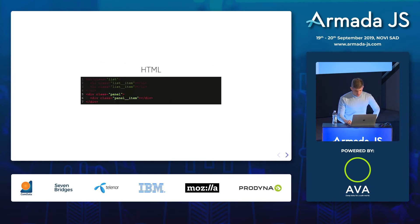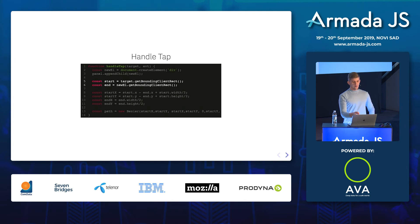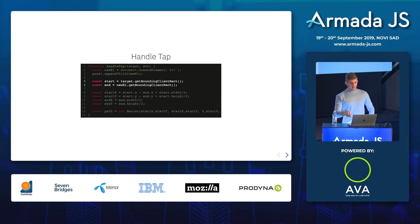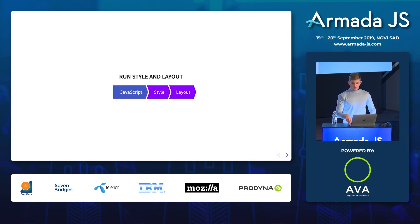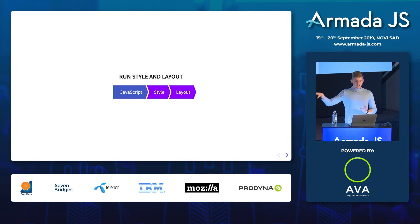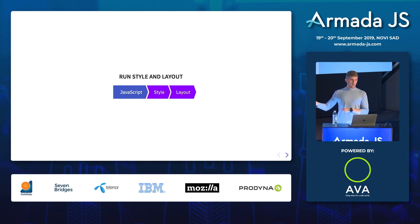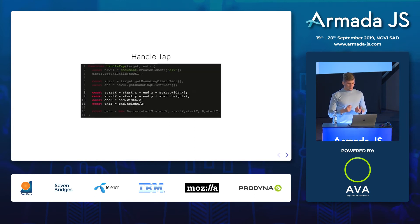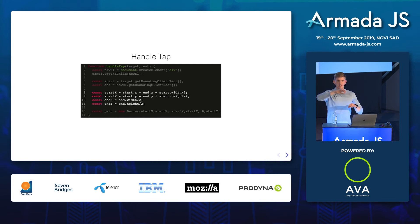We calculate positions of the starting element and the end element. This runs the JavaScript layout pipeline without actually rendering — we're asking the browser: give us the correct numbers but don't render yet, just run layout so we know the values. Based on these values, we can calculate startX, startY, endX, and endY — understanding where the animation will start and where it will end.